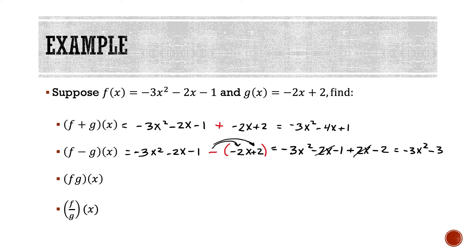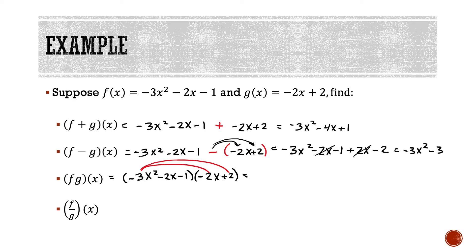For the third one, we have f times g — the multiplication. I write down function f in parentheses and right next to it function g, and we work at multiplying these two together. We use the FOIL method, but expanded a little because the first function has three terms. Starting with -3x² multiplied by both terms in the second parentheses: -3x² times -2x gives +6x³, and -3x² times +2 gives -6x².